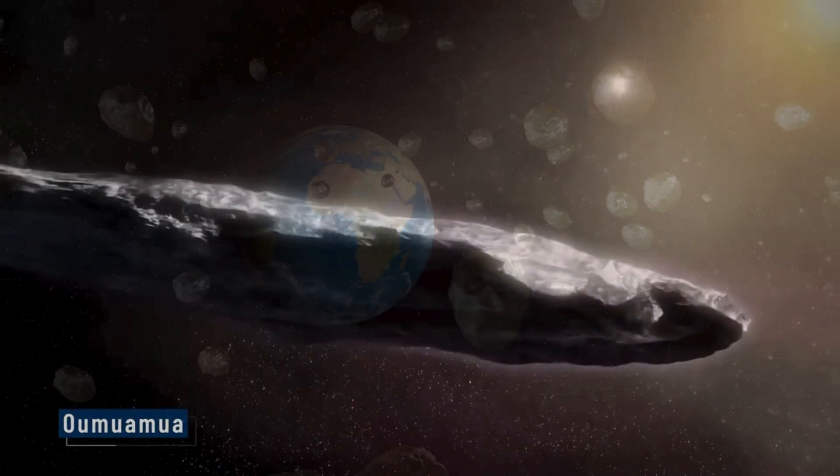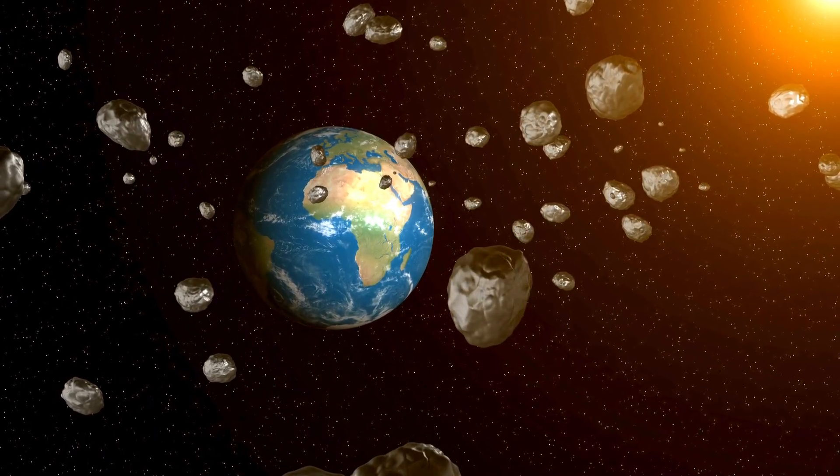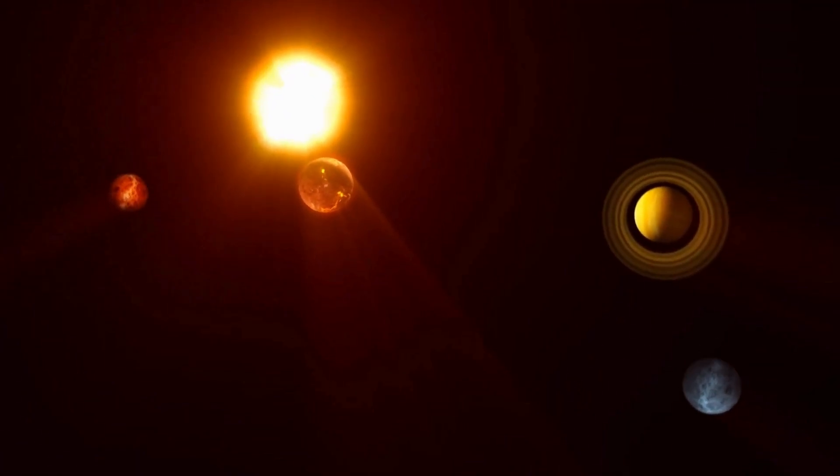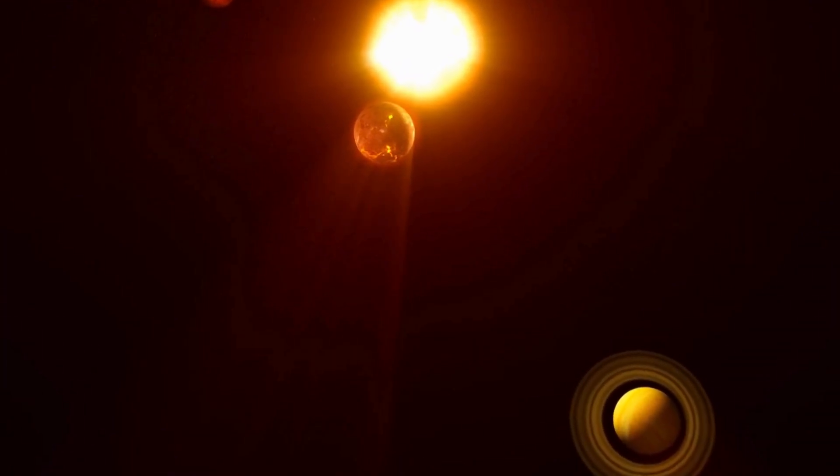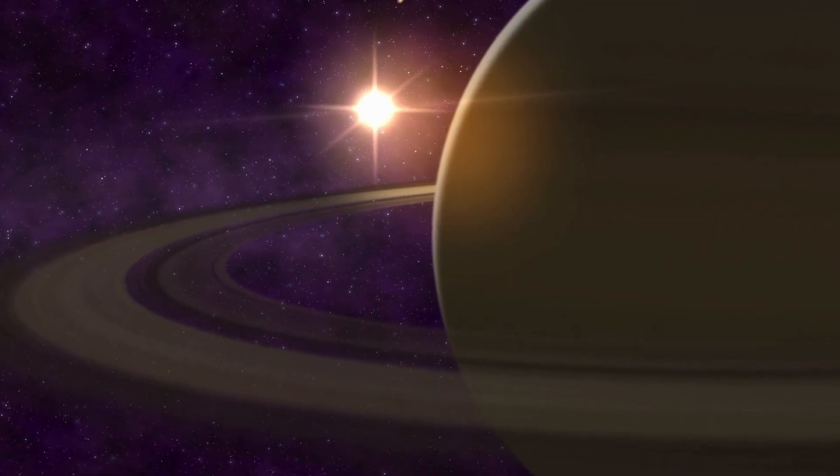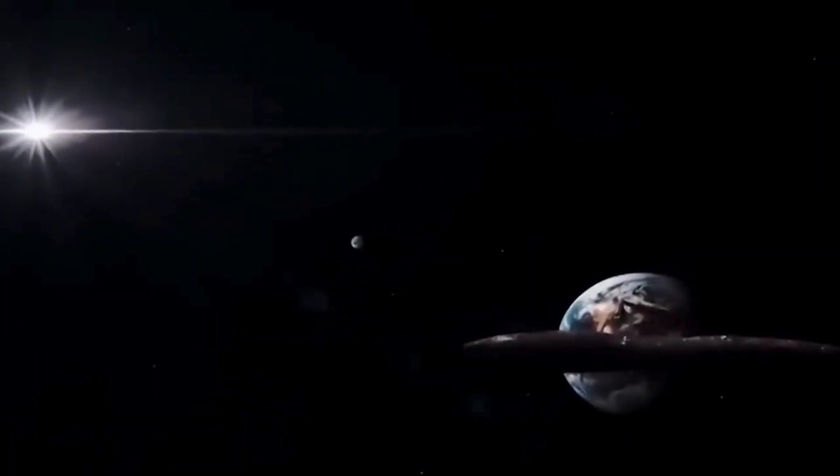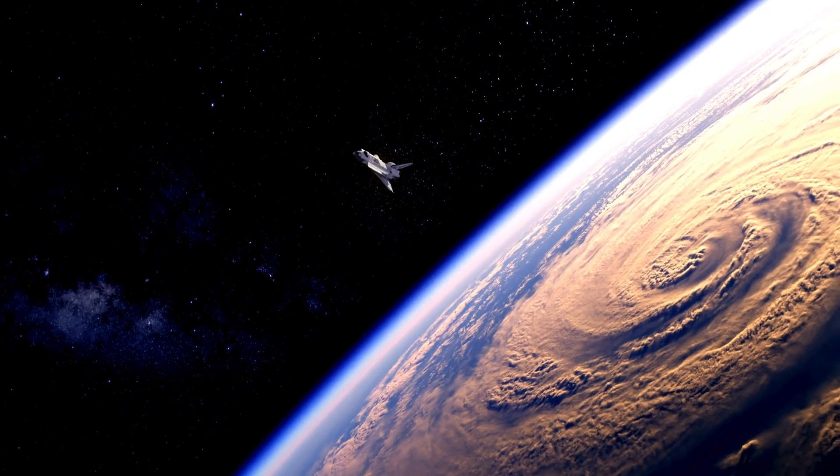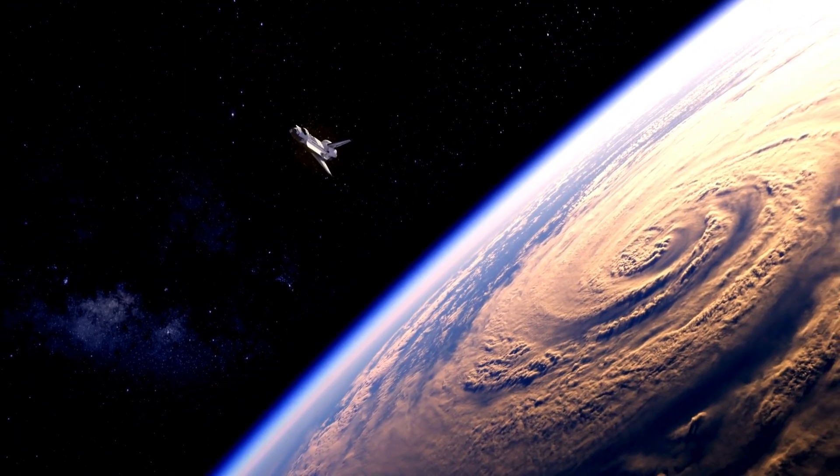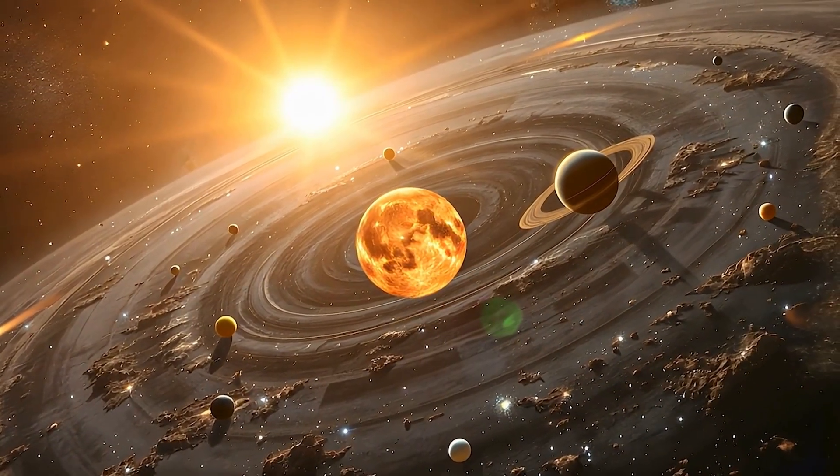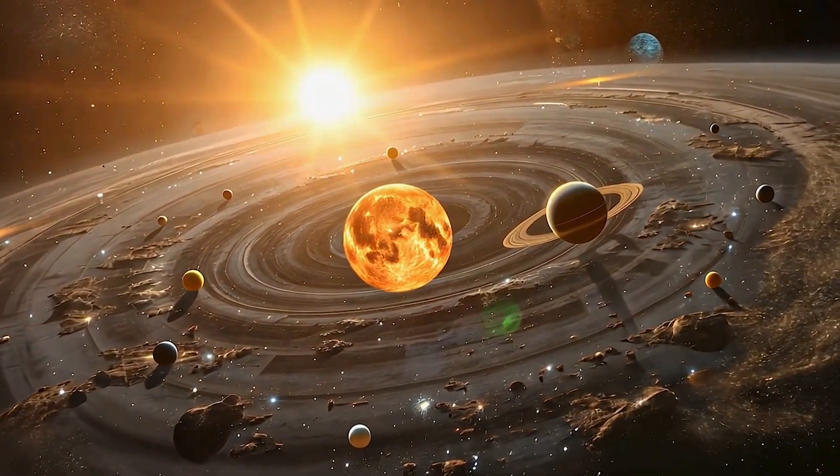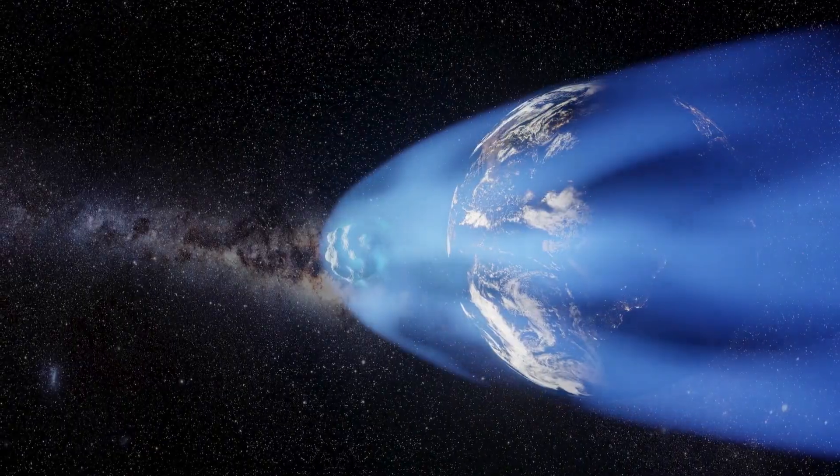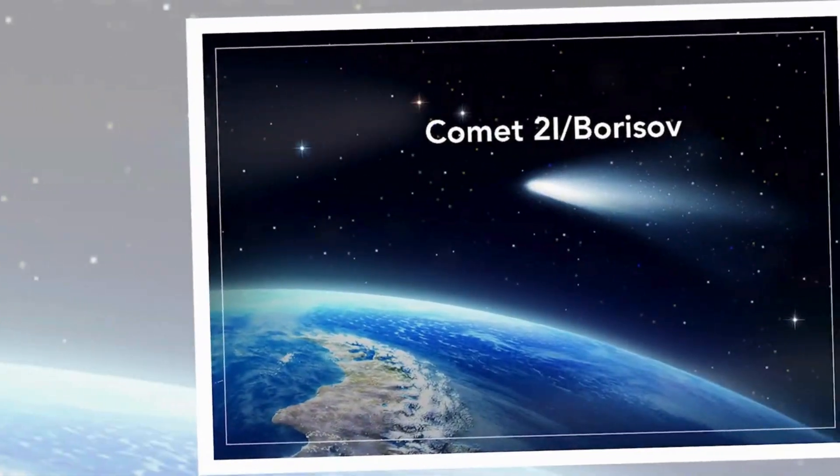The ghosts of past visitors loom large over this moment, reminding us how little we truly understand. When Oumuamua swept through in 2017, it left scientists grasping for answers. Its strange, elongated shape and unexplained changes in speed spark debates that still echo today. Was it a shard of a shattered planet, or something built by hands we can't imagine? Harvard's Avi Loeb dared to suggest it might be a probe, a relic of an alien intelligence, and the idea, though controversial, stuck. Then came 2I Borisov in 2019, more familiar with its comet-like tail, but still a stranger from beyond. Now, 3I-Atlas feels like a bolder, brighter challenge.